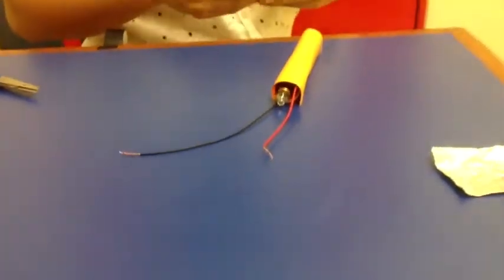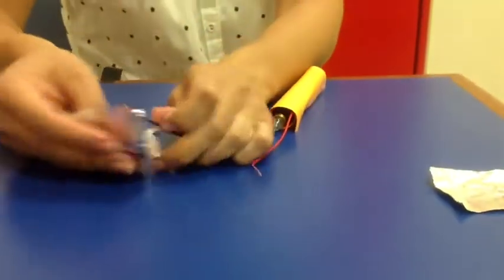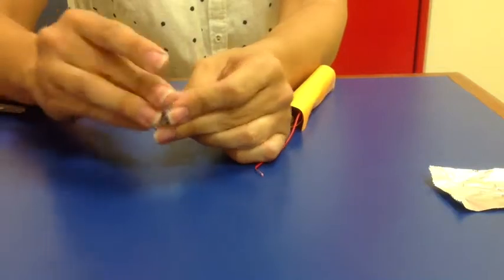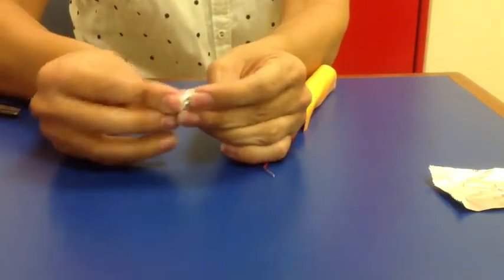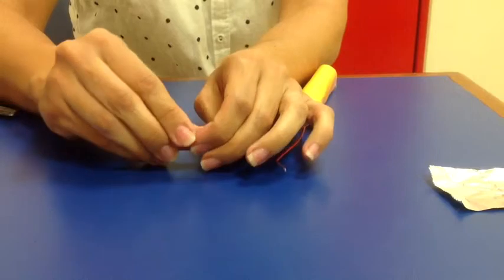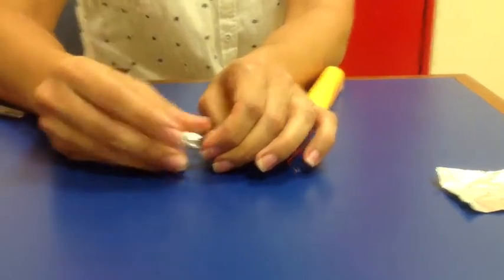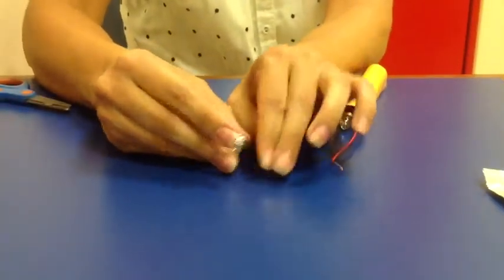And now, to make it look more like an insect or a robot, you wrap the wire, the bare wire, in the aluminum, in a ball shape.